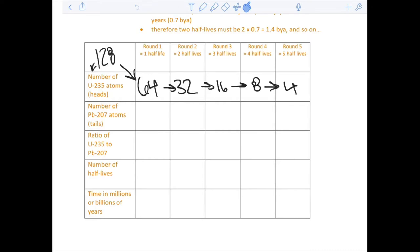Our number of lead atoms: if we started with 128 and went down to 64, we'll do 128 minus 64, that's going to equal 64. We have 64 uranium atoms, 64 lead atoms. That makes sense because this is actually our first half-life. That ratio is 64 to 64, so the ratio of uranium to the ratio of lead is 64 to 64, or another way to say that would be 1 to 1.